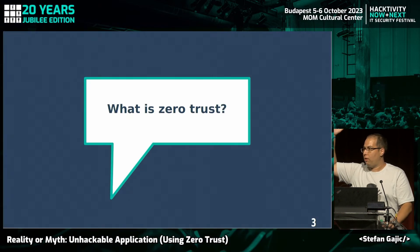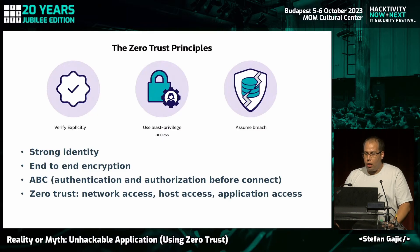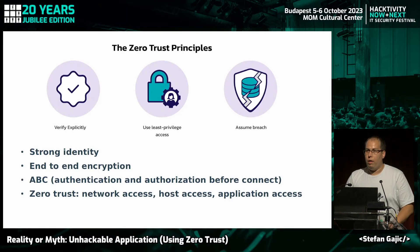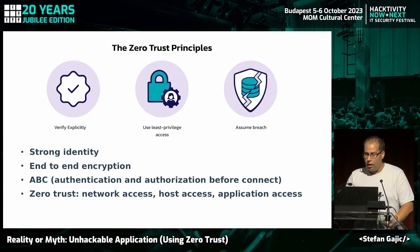In case you didn't hear about it, some of the core zero trust principles are: always verify explicitly, don't trust anybody, use least privilege access, and assume that the network is corrupted. We're talking about zero trust networking specifically. Basically, what we want in zero trust is strong identity, end-to-end encryption, and also ABC — which stands for authentication and authorization before connect. Zero trust has three parts: network access, host access, and application access.